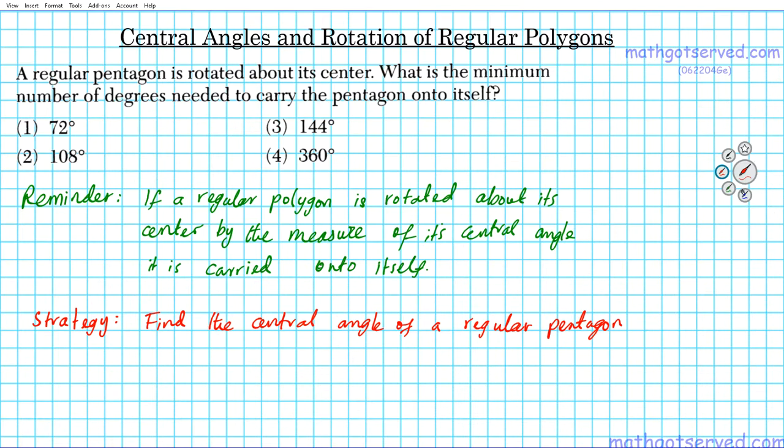So how do we find the central angle of any polygon? We just did it with the example of the square, but let's talk about it generally. The formula is as follows: the central angle of an n-sided polygon is simply the full circle rotation, 360 degrees, divided by the number of sides. 360 divided by n.